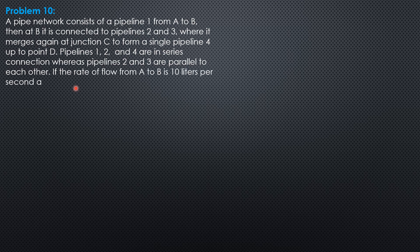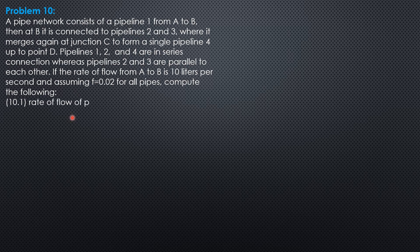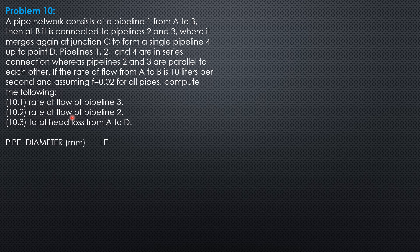Pipelines 1, 2, and 4 are in series connection, whereas pipelines 2 and 3 are parallel to each other. If the rate of flow from A to B is 10 liters per second, and assuming friction factor 0.02 for all pipes, compute the rate of flow of pipeline 3, rate of flow of pipeline 2, the total head loss from A to D.